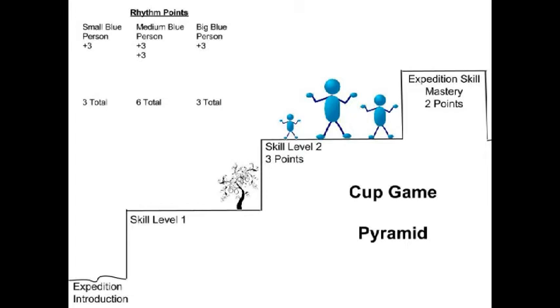Then small blue person practices her skill level 2 a lot. When she is absolutely sure she is ready, she makes a video, submits it to the rhythm experts, and she levels up. She gains two more points for leveling up to skill level 3 for a total of five points.